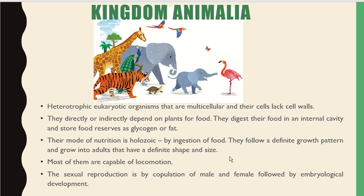Kingdom Animalia consists of heterotrophic, eukaryotic, multicellular organisms whose cells lack a cell wall. They directly or indirectly depend on plants for food. They digest their food in an internal cavity and store food reserves as glycogen or fat. The mode of nutrition is holozoic, that is by ingestion of food.